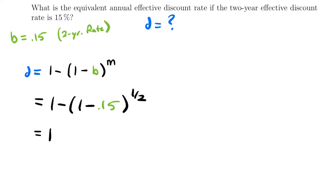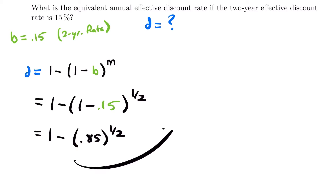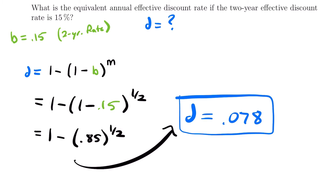Now we can solve for D. We have that D is equal to 1 minus 0.85 to the one-half power. If we plug this into our calculator, we will find that D is approximately 0.078. That is approximately the value of our annual effective discount rate given this two-year rate, and that would be the final answer to this problem.